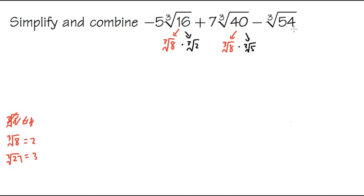Lastly, we have 54. We know that 27 goes into 54 twice. So I can break this down as the cube root of 27 times the cube root of 2, because 27 times 2 is equal to 54. Now let's see what we have.